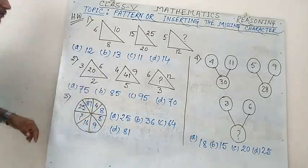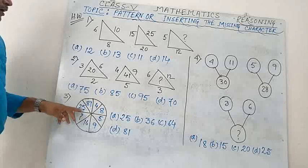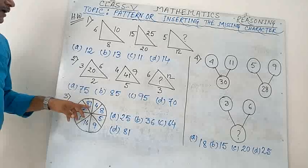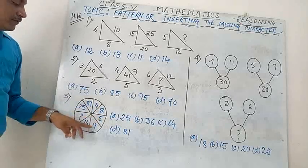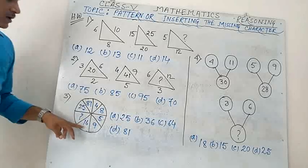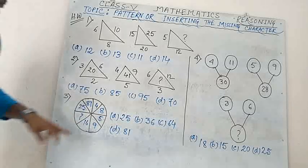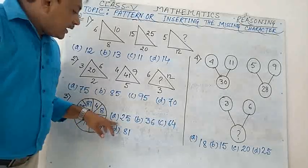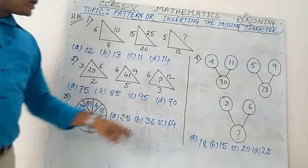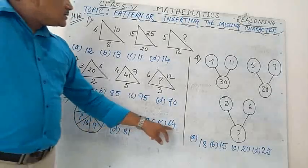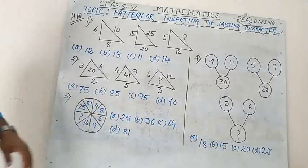Number 3: There is a circle with values 25, 81, 4, 8, 5, 9, 16 — question mark. Options: A) 25, B) 36, C) 64, D) 81.